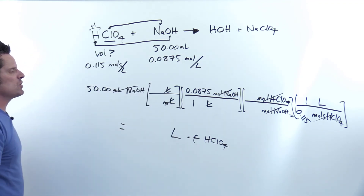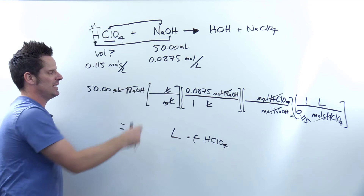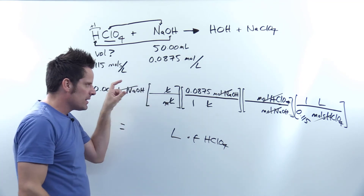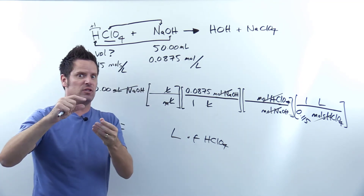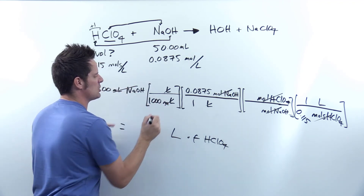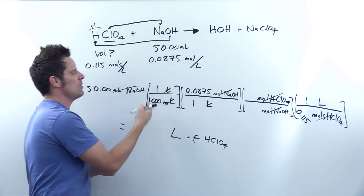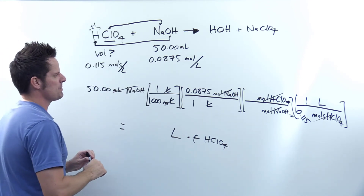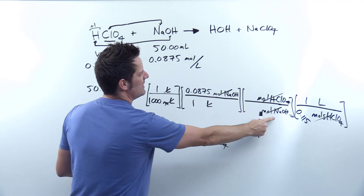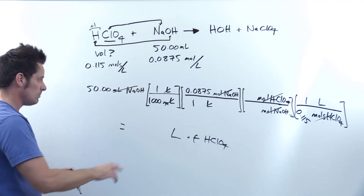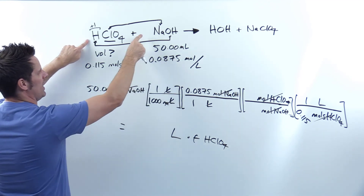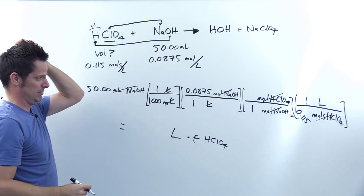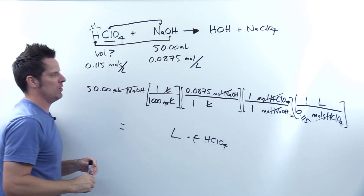That's my target unit. For the milliliters-to-liters conversion, the big number 1,000 goes next to the small unit and the small number 1 goes next to the big unit — there are 1,000 milliliters in one liter. For the molar ratio of NaOH to HClO₄, that comes from the balanced chemical equation, where it's 1:1 all the way across — for every 1 mole of NaOH, I react 1 mole of HClO₄.